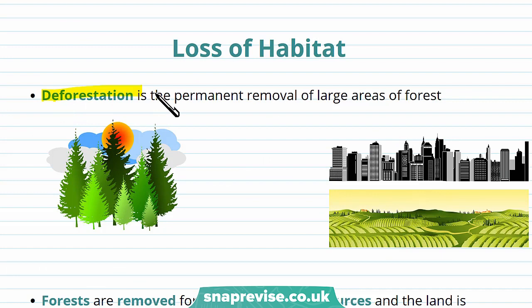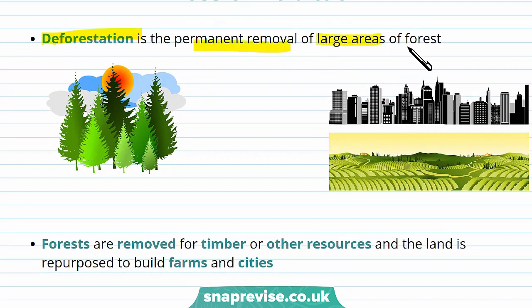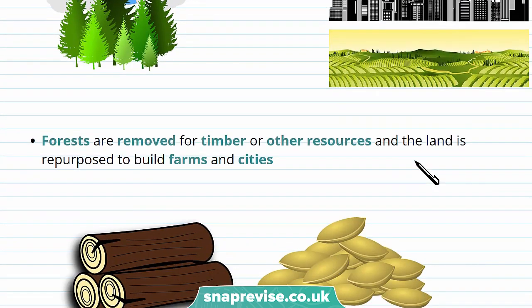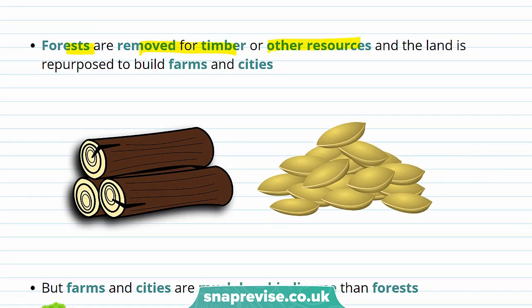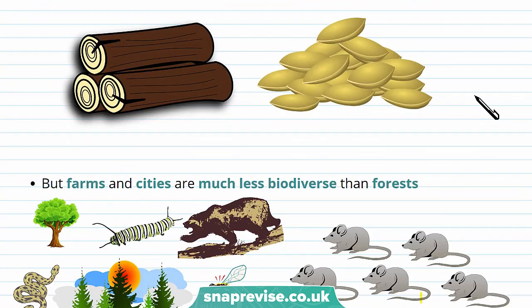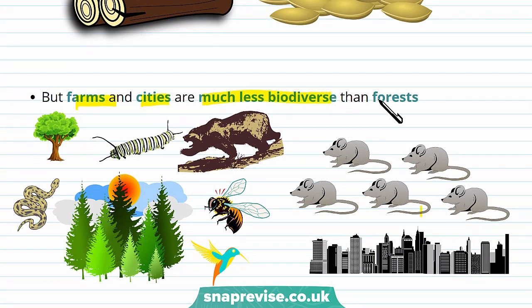Loss of habitats can occur through deforestation — the permanent removal of large areas of forest. Forests are removed for timber and other resources which we can use for building things, and the land is also repurposed to build farms and cities. However, deforestation reduces the number of trees and the number of animals supported by these trees. As a food source and home has been lost, this can in turn affect predator species and the whole ecosystem.